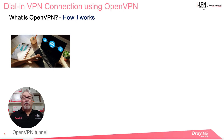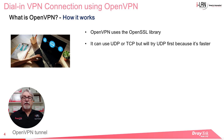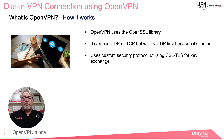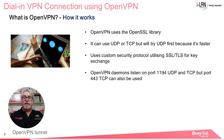OpenVPN uses the OpenSSL library, which is an open source toolkit used for encryption and to generate security certificates. It can use either UDP or TCP to transmit data, but it works best over UDP. UDP is a little less stable than TCP but it's faster, which is why OpenVPN first tries to establish the VPN using UDP. If those connections fail, it'll try TCP. It uses a custom security protocol utilizing SSL and TLS for key exchange. By default, OpenVPN listens on port 1194 UDP and TCP, but port 443 TCP can also be used.